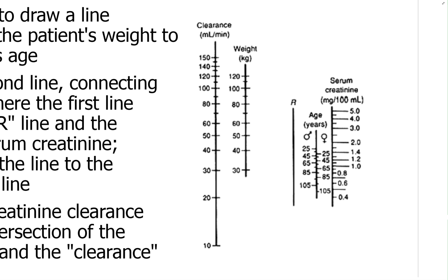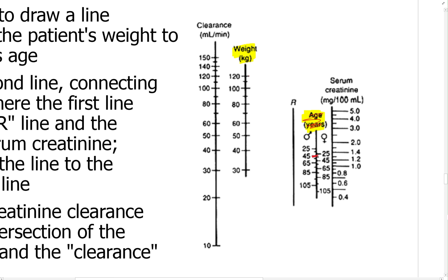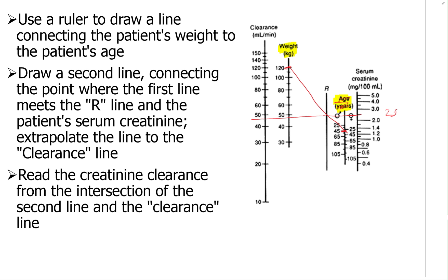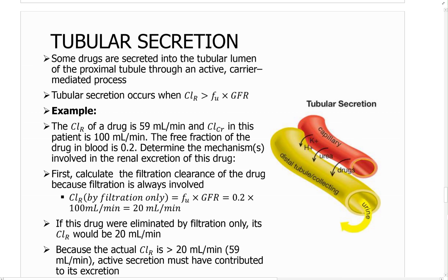To calculate creatinine clearance using a nomogram, you have to know the weight and age of the patient. For example, assume someone who is 45 years old with a weight of 120 kilograms — you draw a line, and you see this intersects the R line. From this line you draw another line — that means he has a serum creatinine of about 2.5, and this gives a value below 50. Nowadays you can just search for a creatinine clearance calculator online, enter age, weight, and serum creatinine, and it will give you the result.